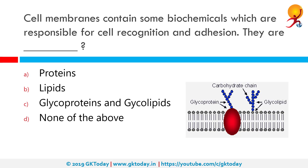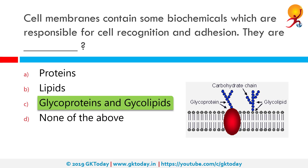Cell membranes contain some biochemicals which are responsible for cell recognition and adhesion. They are glycoproteins and glycolipids. These are present on the cell membrane surface and often have short carbohydrate chains protruding out from the cell surface. They form hydrogen bonds with the water molecules surrounding the cell and thus help stabilize the membrane structure.